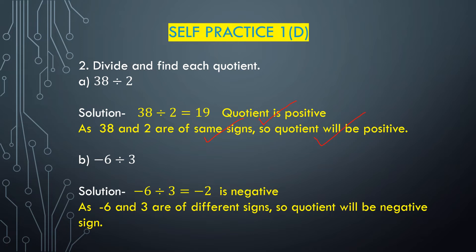Part B: minus 6 divided by 3. Minus 6 is a negative integer and 3 is a positive integer. When we divide a negative integer by a positive integer, the quotient will be negative. We know 3 multiplied with 2 is 6, so minus 6 divided by 3 equals minus 2, which is a negative integer. When both are of different sign, the quotient will be negative.